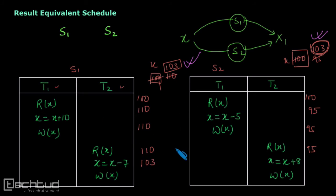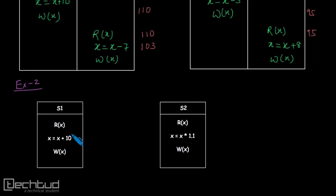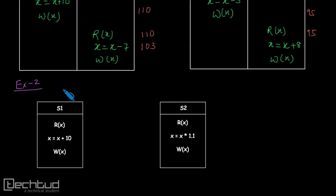Now let us take another example. Here we have schedule S1 and schedule S2 — I have taken this example from the book. We have to check whether these two schedules are result equivalent.